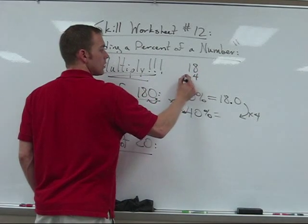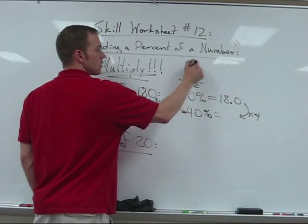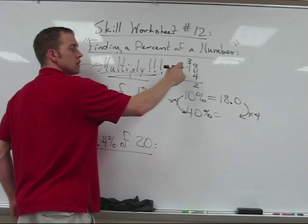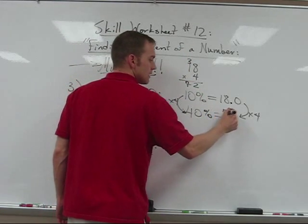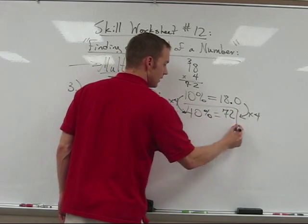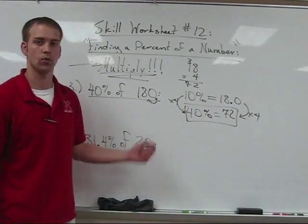Okay, so 18 times four, looks like we get 32 here, carry the three. Four times one is four plus the three is seven. Cool thing about this is: we say 72 would have to be 40% of this original number.